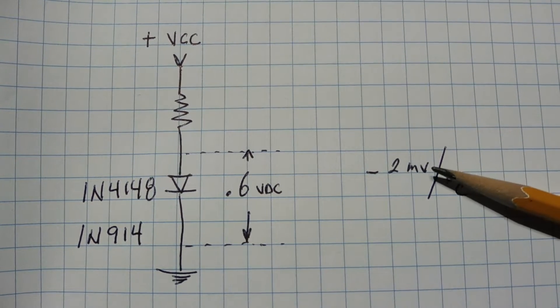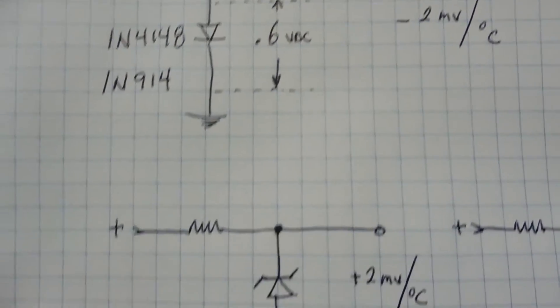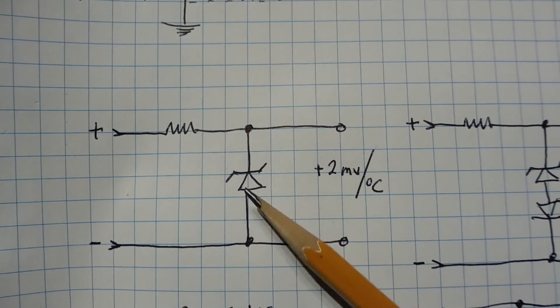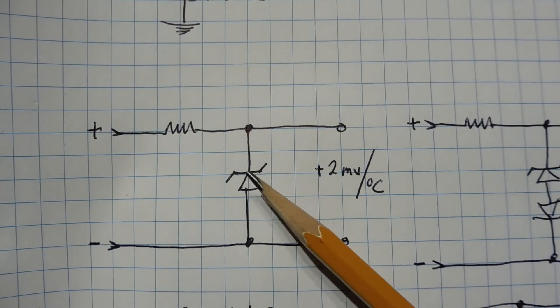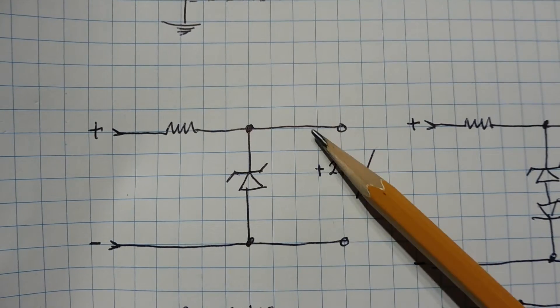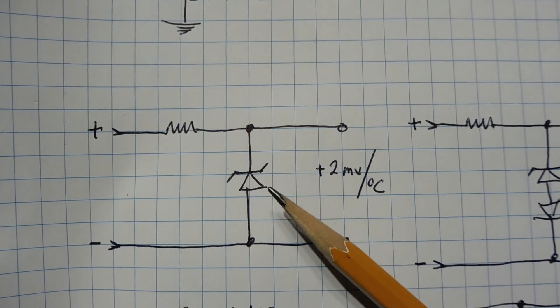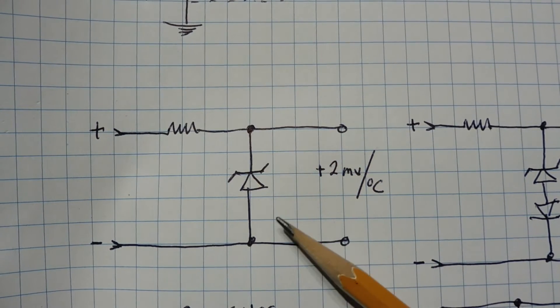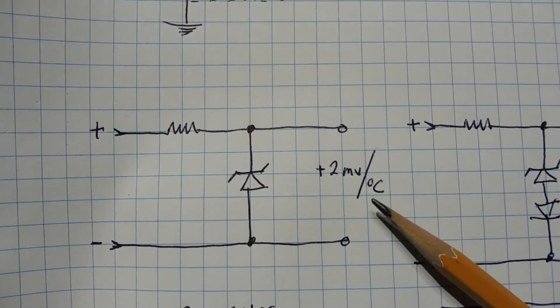If we take a reverse biased diode, like a Zener diode, in a voltage regulator circuit, inputting 12 volts with a 9 volt Zener diode, we'll get a 9 volt output when the diode goes into its breakdown or avalanche mode. The voltage across the Zener diode will increase 2 millivolts per degree Celsius, giving it a positive temperature coefficient.